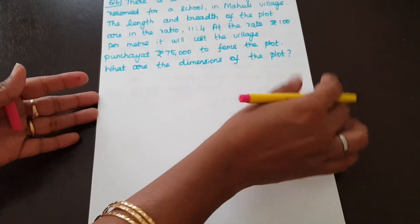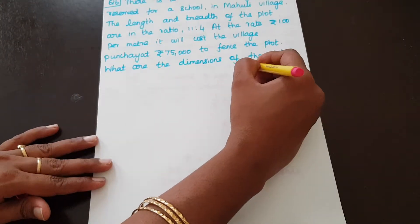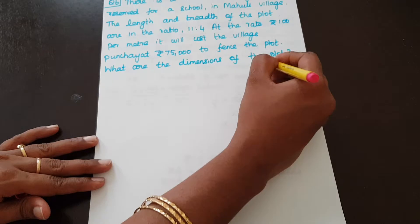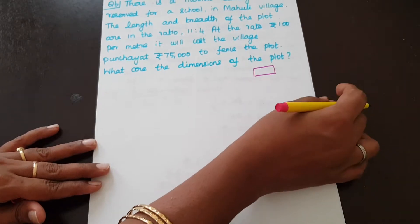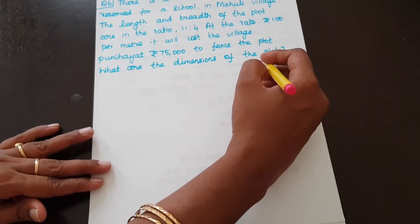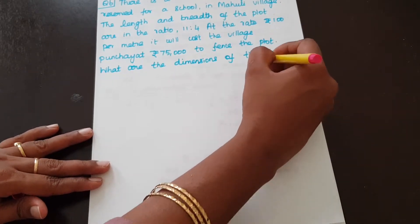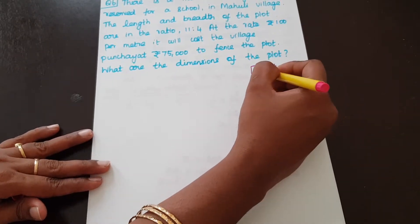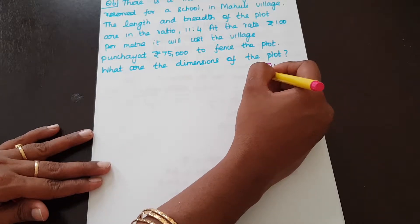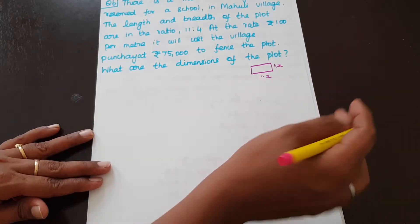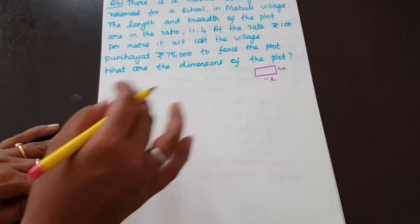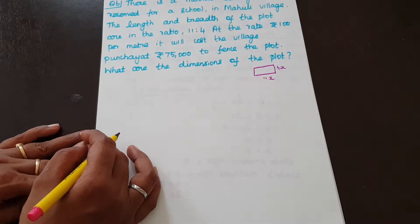So there is one rectangular plot. The length and breadth ratio is 11 is to 4. We will take the common variable as X, so length is 11X and breadth is 4X.